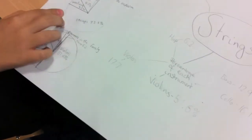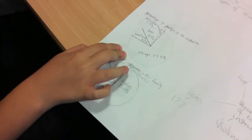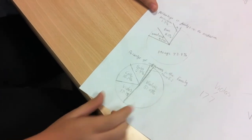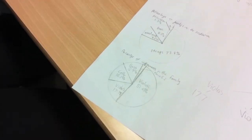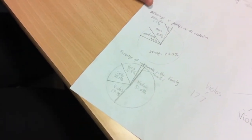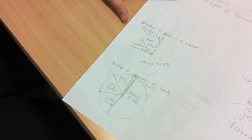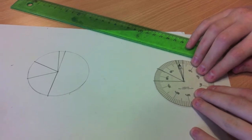The string instruments make up 73.8% of the orchestra. In that, violins make up 51.6%, violas make up 17.7%, cellos make up 17.7%, the bass make up 16.1%, and bass make up 12.9%.